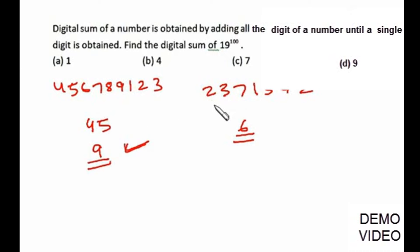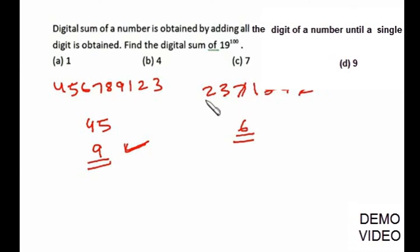The digital sum is always the remainder obtained after dividing the number by 9. If the remainder is 0, the digital sum will be 9, as in the first case. For the number 2371542, dividing by 9 — using the divisibility test — cancel digits that sum to 9: 7 and 2 cancel, then 5+4=9 cancels, leaving 3+2+1=6, which is the digital sum.